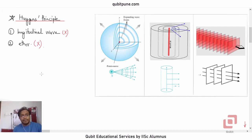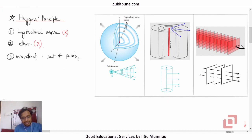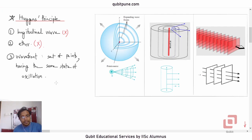What exactly is a wavefront? A wavefront is a set of points having the same state of oscillation at all times. Depending on the geometry or size of the source, we get wavefronts of different shapes.